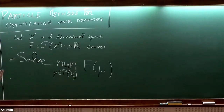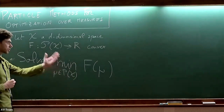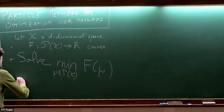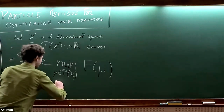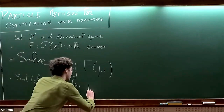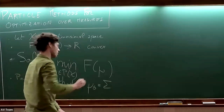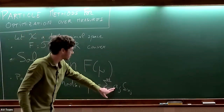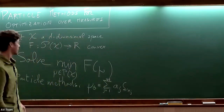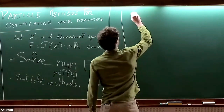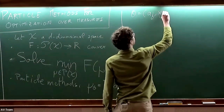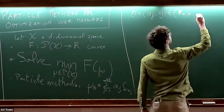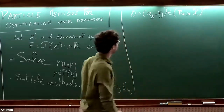Later we will see that the methods I discuss generalize to non-negative measures of finite mass or general finite signed measures. The type of algorithm we consider is particle gradient methods. The idea of particle methods is as follows: we write our probability measure μ as a sum of weighted Dirac masses. We choose a number of particles M, and they have weights a_j and positions x_j. The parameters θ consist of all the a_j and x_j, living in R+ times X^M.